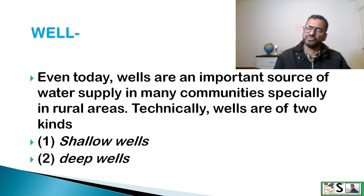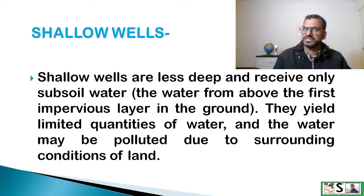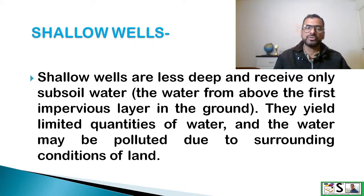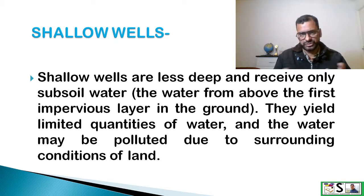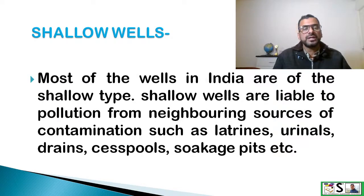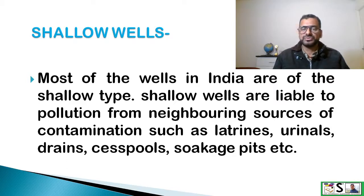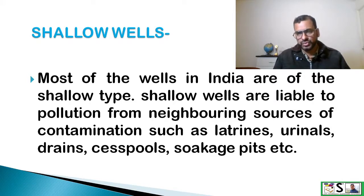Technically, wells are of two kinds: shallow wells and deep wells. Shallow wells are less deep and receive only subsoil water, meaning water from above the first impervious layer in the ground. They yield limited quantities of water and the water may be polluted due to surrounding conditions. Most of the wells in India are of shallow type. Shallow wells are liable to pollution from neighboring sources of contamination such as latrines, urinals, drains, cesspools, soak pits, etc.